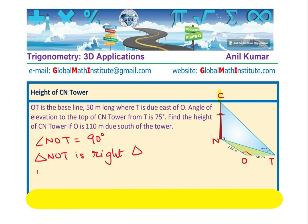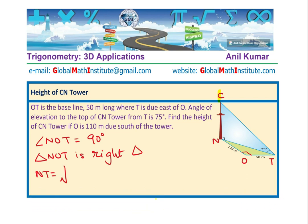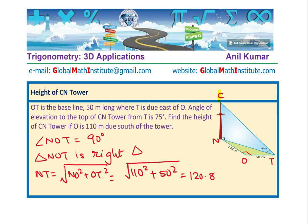We can find the third side NT using the Pythagorean theorem: NT = √(NO² + OT²) = √(110² + 50²) = √14600 ≈ 120.8 meters. So the distance from N to T is 120.8 meters.